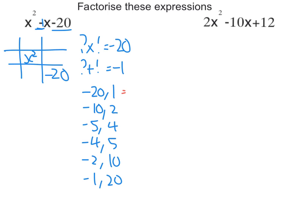Only one of these will add to get negative 1, so let's work it out. Negative 20 add 1 is negative 19, so it's not that one. Negative 10 add 2 is negative 8, it's not that one. Negative 5 add 4 is negative 1, so it's that one there.